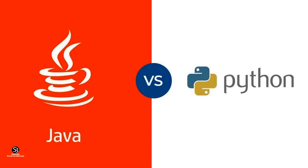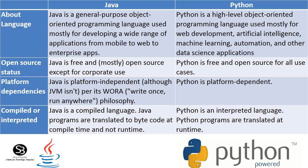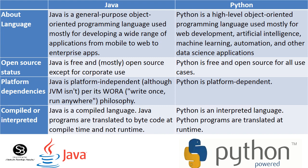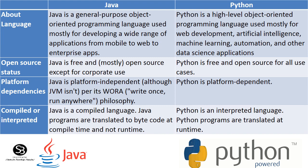Now let's talk about the difference between Java and Python. Java is a general-purpose object-oriented programming language, mostly used from mobile to web applications. Python is a high-level object-oriented programming language, mostly used for web development, artificial intelligence, machine learning, automation, and other data science applications.